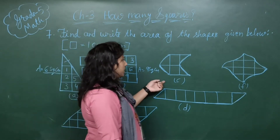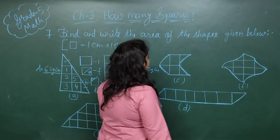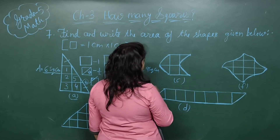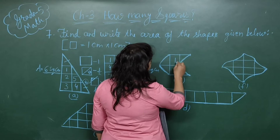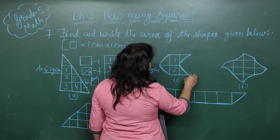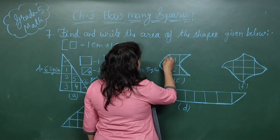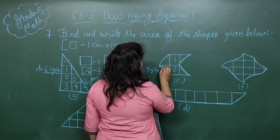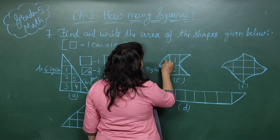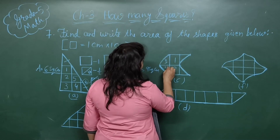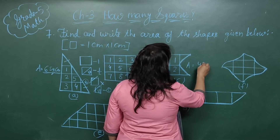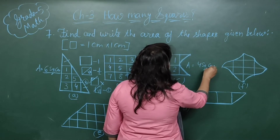Now picture number C — it looks like a C and is a bit tricky. As I told you, count complete squares: 1 and 2. Some parts are less than half, but they complete each other to form whole squares. So counting them: 1, 2, 3, and 4. This shape has an area of 4 square centimeters.